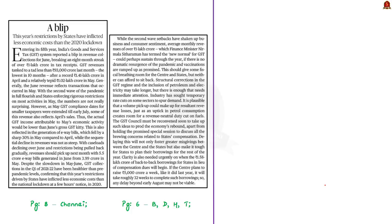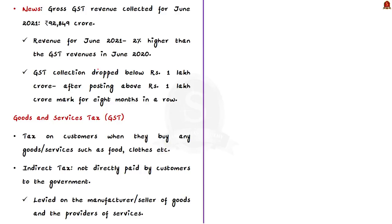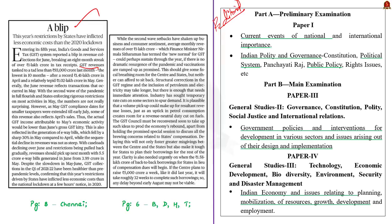Now let us take up this editorial article titled 'A Blip.' Recently, the Ministry of Finance released the gross GST revenue collected from June 2021 — it was over 92,000 crores, of which the central GST is around 16,000 crores, state GST is over 20,000 crores, IGST is almost 50,000 crores, and cess collected is around 7,000 crores. The revenue for June 2021 is 2% higher than the GST revenues in the same month last year. But after posting above one lakh crores for 8 months in a row, the GST collections in June 2021 dropped below one lakh crores — and today's editorial is about this.